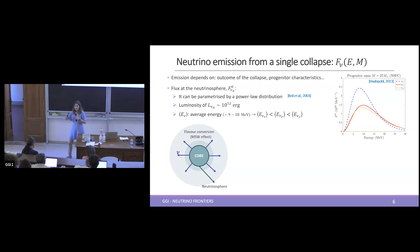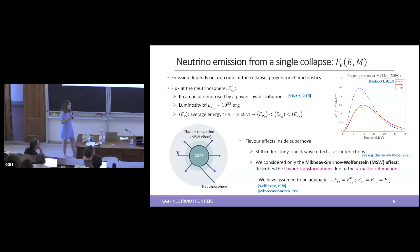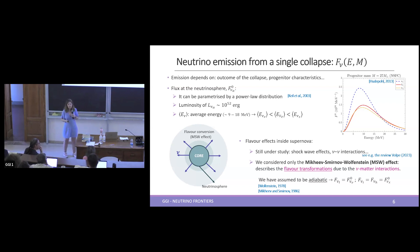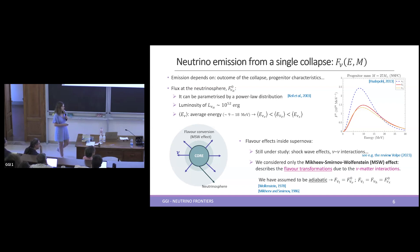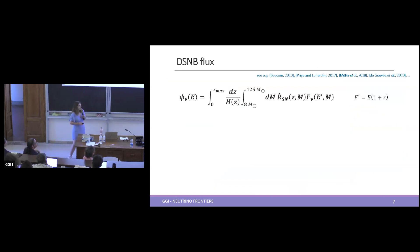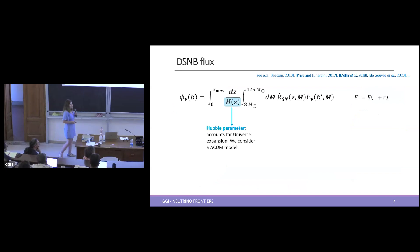Once neutrinos are emitted at the neutrinosphere, they still have to propagate through matter until they reach the surface of the supernova. During this propagation they can experience different flavor effects, which are still under study. For our work, we only considered the well-established MSW effect, treated as adiabatic. For the DSNB flux, since we are considering emission from all collapses in the universe, we integrate over redshift and account for the expansion of the universe using a standard ΛCDM model, including the redshift of energies.